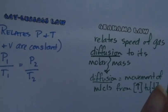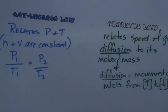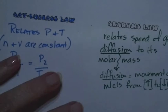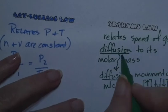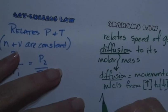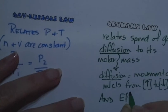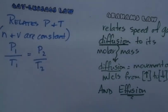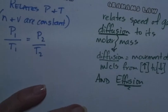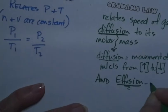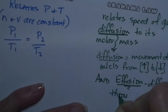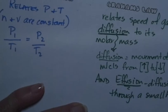Graham's law asks: we have big molecules and small molecules — which ones diffuse faster? He also relates the speed of gas to diffusion and effusion. Effusion is diffusion through a small hole.